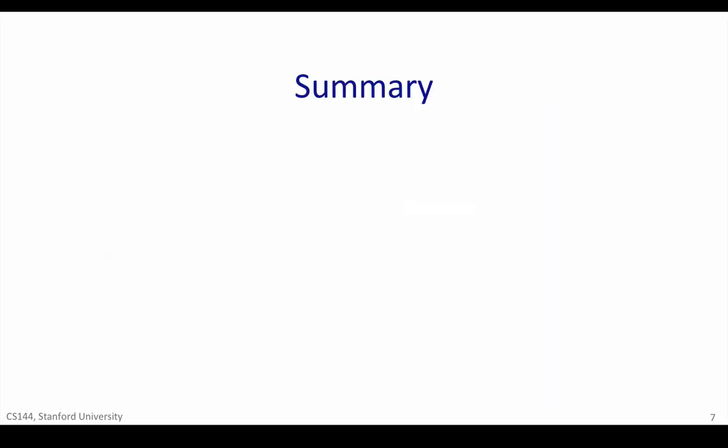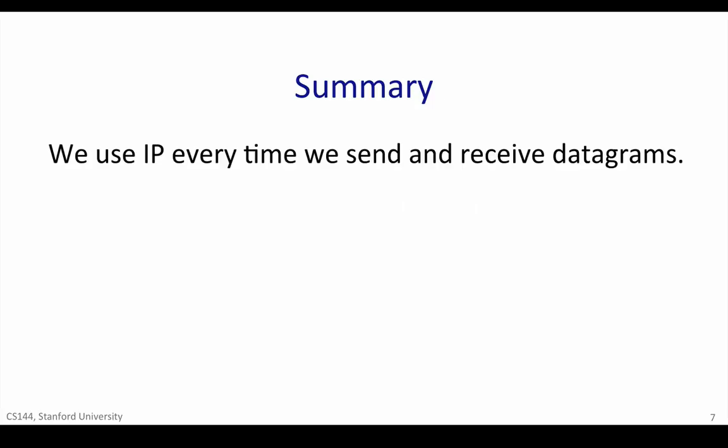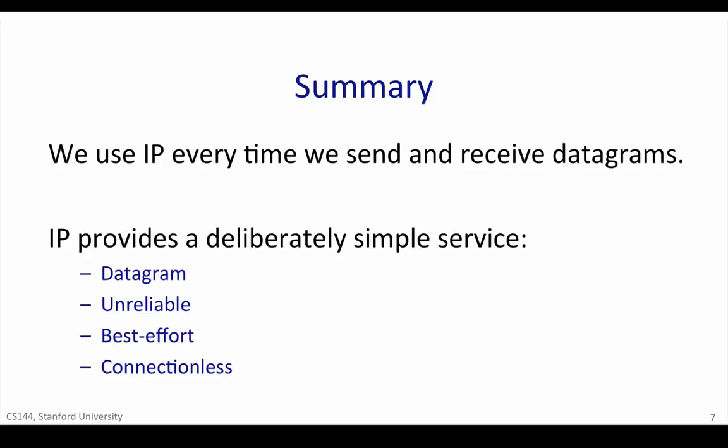So in summary, IP is very important. We use it every time we send and receive packets in the internet. IP provides a deliberately simple service — a simple, dumb, minimal service with four main features. It sends datagrams hop-by-hop across the internet. The service is unreliable and best effort. There's no per-flow state, making the protocol connectionless. At this point, you should feel comfortable with what the IP protocol is, what its service model is, and how it fits into the internet 4-layer hierarchy.